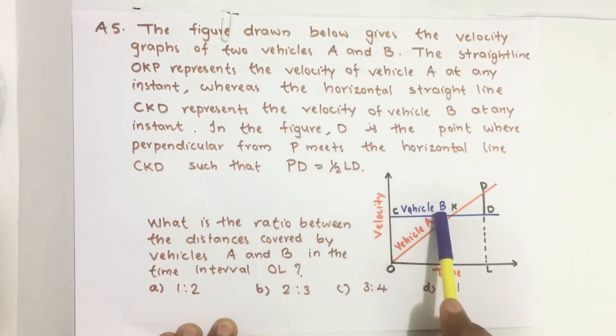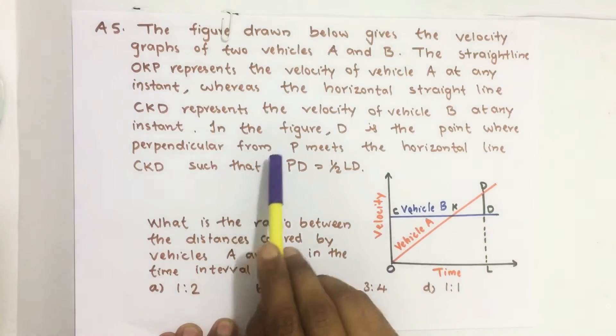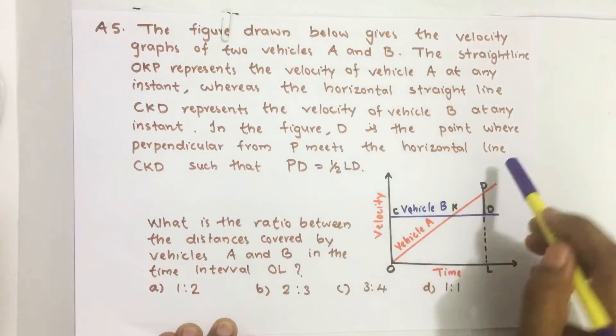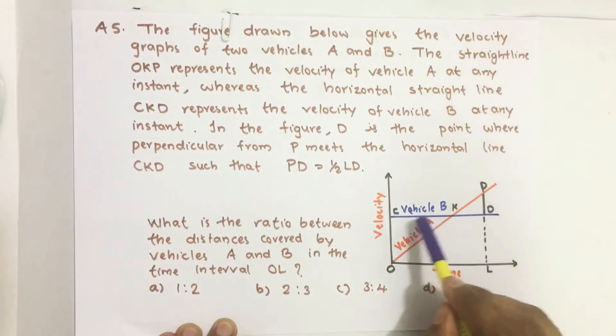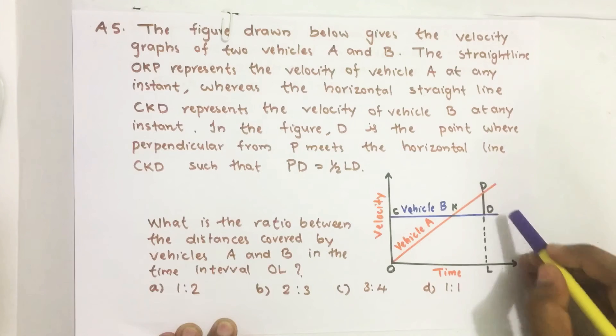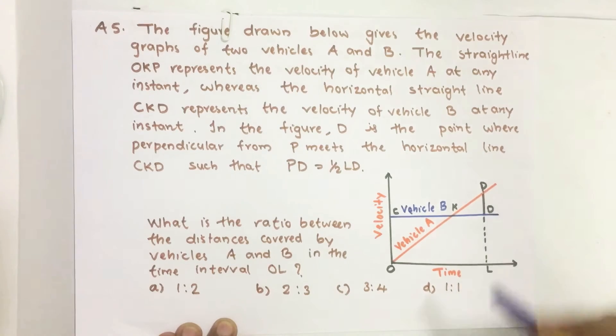In the figure, D is the point where perpendicular from P meets the horizontal line CKD, where PD equals half of LD distance.